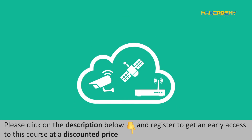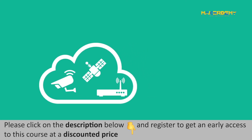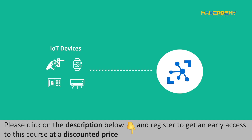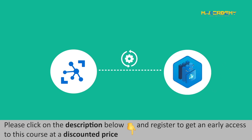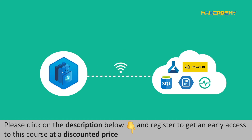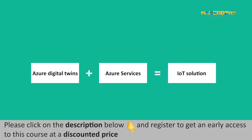Azure Digital Twins allows us to define a digital model which represents a physical object or an entity. These digital models provide live and up-to-date representations of the real world. We can connect an IoT device to the Azure IoT Hub to keep the live execution going without interruption. The IoT Hub helps manage digital twin models and provide data to drive the digital model. The output data from the Azure Digital Twin model can be routed to other Azure services for storage or additional analytics, providing a complete IoT solution.